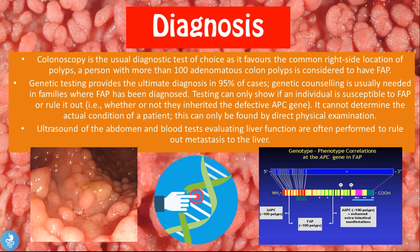Now let's talk about the diagnosis of FAP syndrome. Colonoscopy is the usual diagnostic test of choice, as it favors the common right-side location of polyps. A person with more than 100 adenomatous colon polyps is considered to have FAP. Genetic testing provides the ultimate diagnosis in 95% of cases, and genetic counseling is usually needed in families where FAP has been diagnosed.